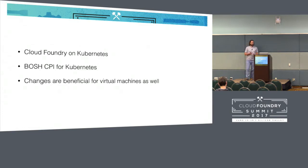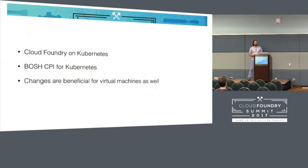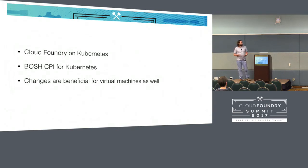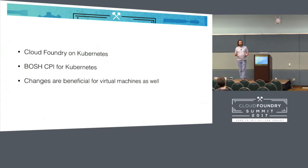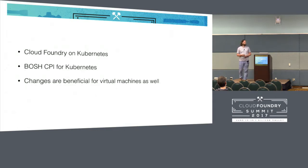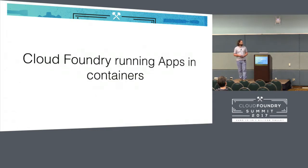What I want to bring across is that running Cloud Foundry on Kubernetes is an interesting problem, and that a BOSH CPI for Kubernetes is a possible solution. Furthermore, lots of changes that might be required in BOSH to make that really usable aren't actually harmful for virtual machines as well. Today I'll be showing where I come from, what I did, the state of the project, and where we can go.